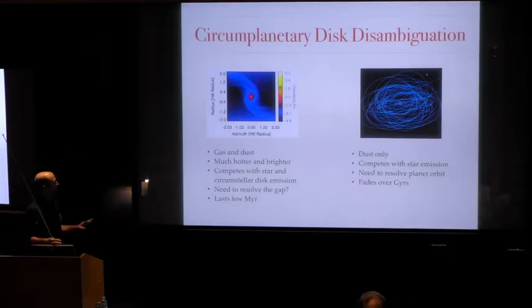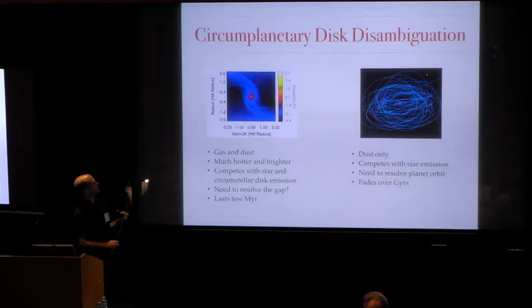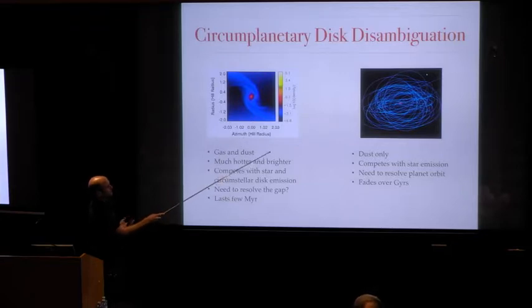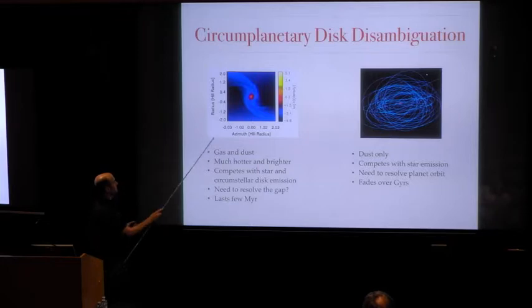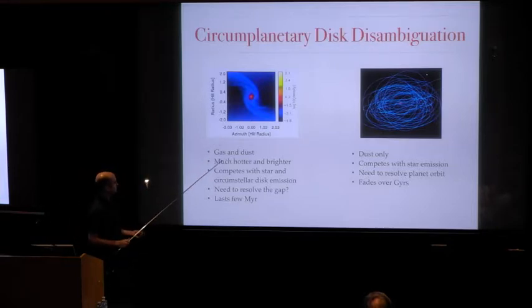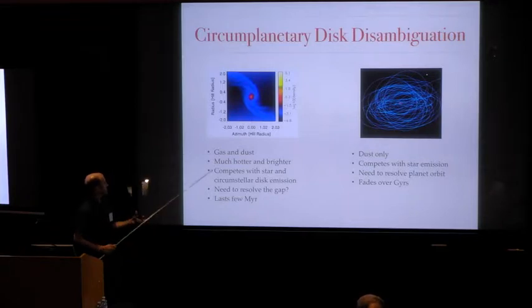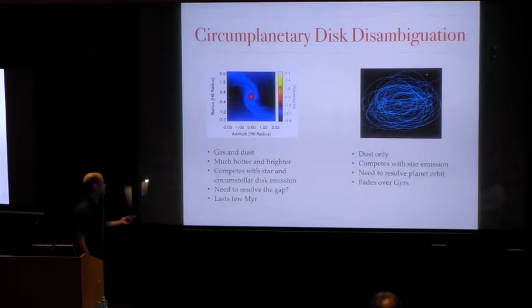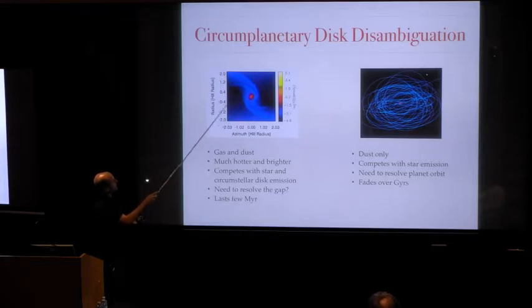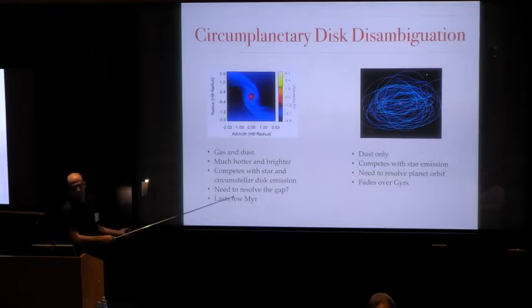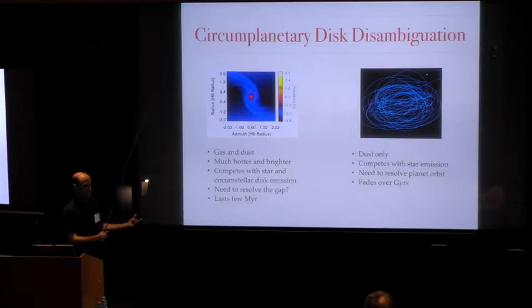It's probably a good moment to take a step back and talk about two different types of circumplanetary disks. I don't even know what to call these things. We've already had talks about gaseous circumplanetary disks, but they're very different beasts. These disks, they're much hotter and they're much brighter. This makes them very appealing for looking for them observationally. One challenge is that in this case, you have to compete with the bright circumstellar disk around it. You'd also like to be able to resolve the gap so that you can see the planet and separate it from the disk. And these last for a few million years and then they're gone.